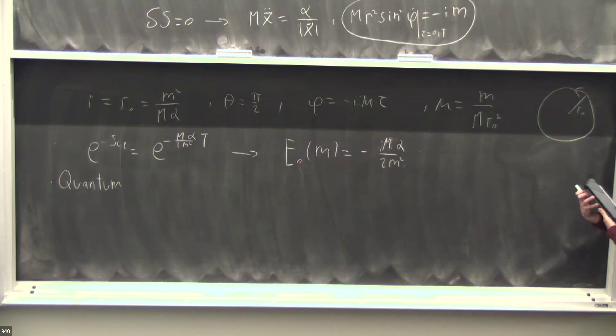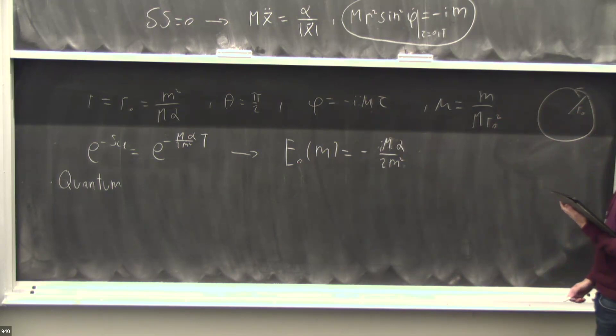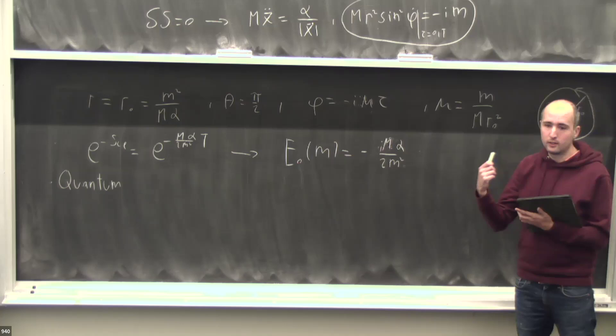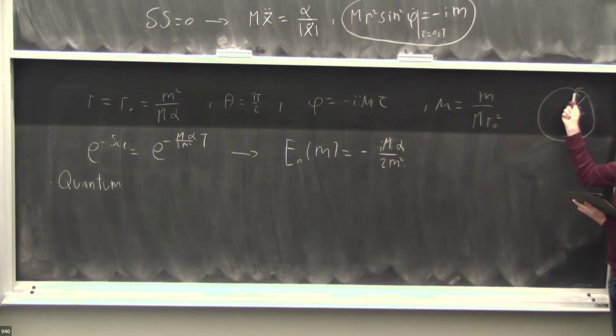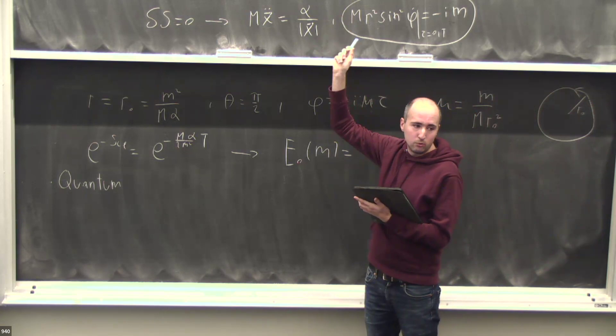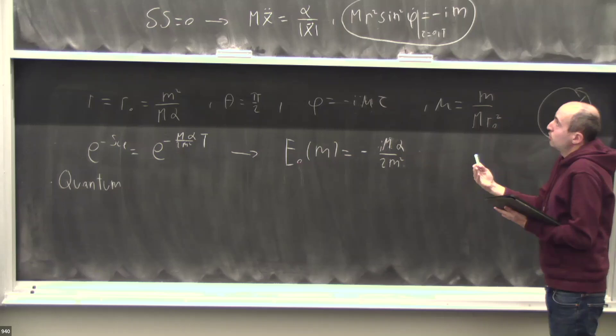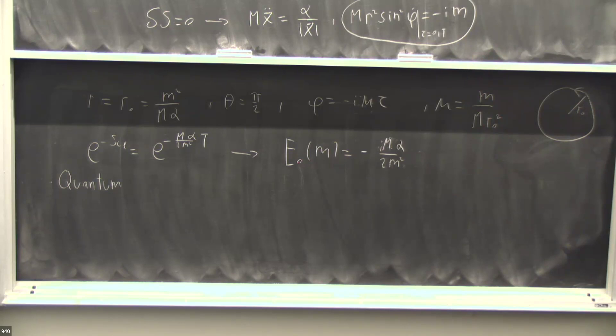One thing I want you to appreciate is that even though we are in quantum mechanics, when we do the calculation this way I'm using a classical trajectory. This doesn't mean there is spontaneous symmetry breaking in quantum mechanics — because we're taking the overlap with a wave function at the end, there will be no spontaneous symmetry breaking in the final result. But there is an effective spontaneous symmetry breaking when I do the calculation this way, and this will be important later.